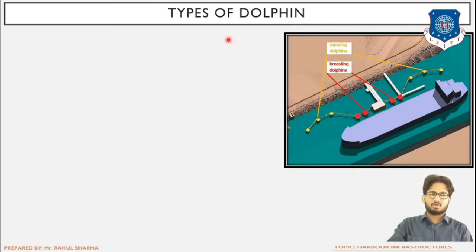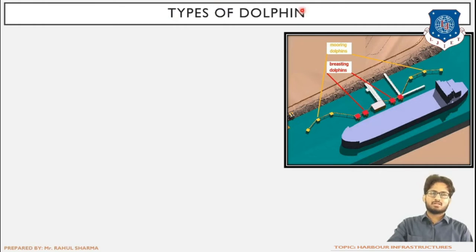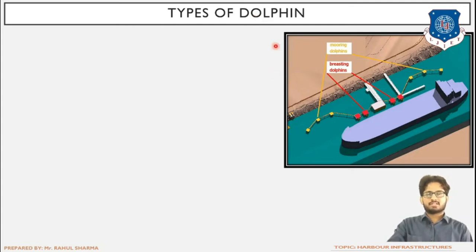The first topic we are learning is the types of dolphins. The classification of dolphins is in two types. The first type is based on location — these are the resting and mooring dolphins. The second classification is based on material.